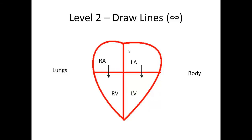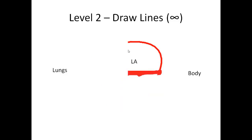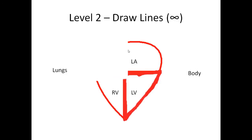So I'm going to draw arrows on each side: from the right atrium to the right ventricle, and from the left atrium to the left ventricle. The next thing is to decide where we're going to go from there — which ventricle are we going to start at, the right or the left?